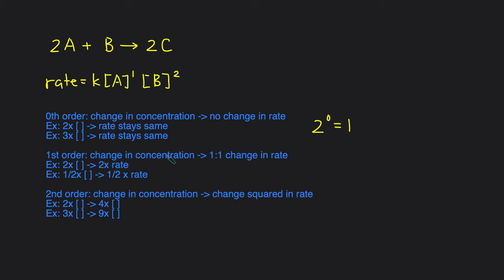First order means that a change in concentration leads to a one-to-one change in rate. For example, if you doubled the concentration, that doubles the rate because 2 to the first power is 2. Likewise, if you halve the concentration, the rate will halve. Second order means that when you change the concentration, the rate changes by the square of that change. For example, if we double the concentration it'll be 2 squared, leading to a 4 times increase in rate. If we triple the concentration, it'll be 3 squared — a 9 times increase in rate.